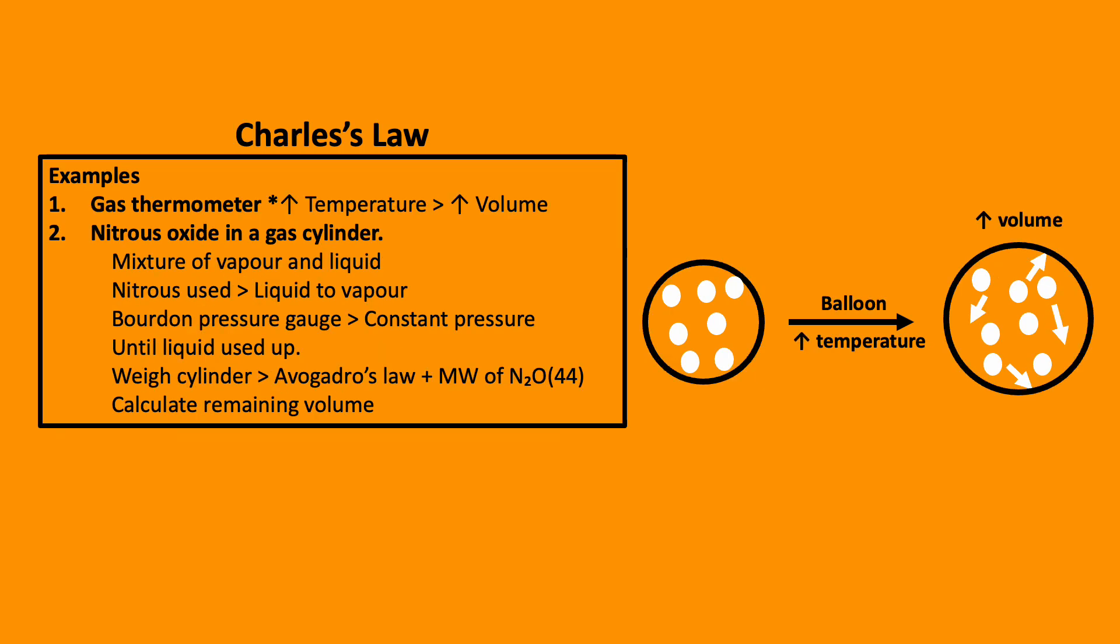Clinically relevant examples for Charles's law include the nitrous oxide cylinder. Nitrous oxide is a colourless gas stored in a cylinder as a liquid and a vapour above the liquid, below its critical temperature. The cylinder pressure does not accurately indicate the filling state of the cylinder, as the saturated vapor pressure will only decrease once all of the liquid portion of the nitrous oxide is used, and therefore the cylinder is mainly empty.